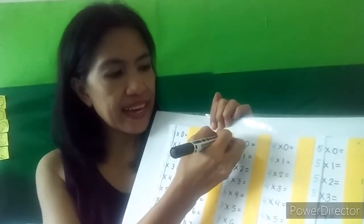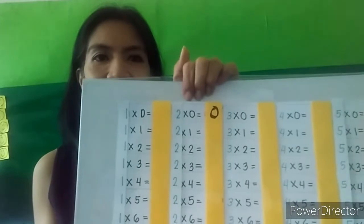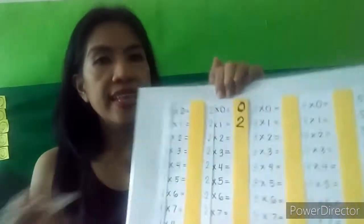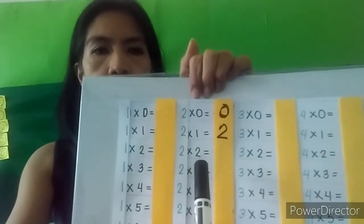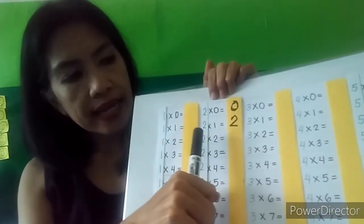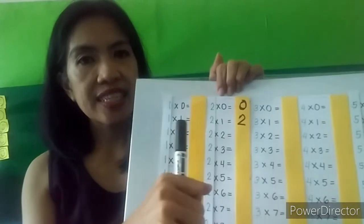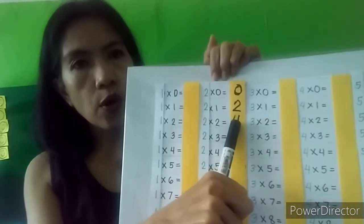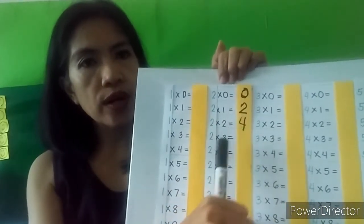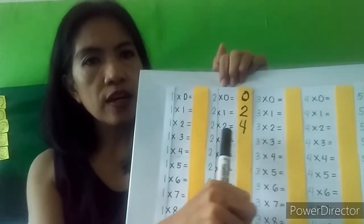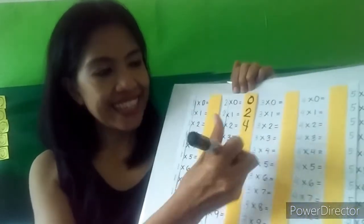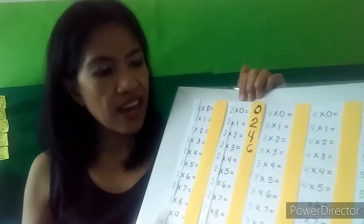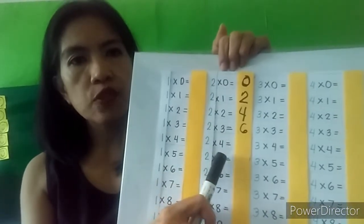Two times one is one — one lets two win. Now two times two: you have two plus two, which is four. Two times three: let's add four plus two, which equals six. So two times three equals six.